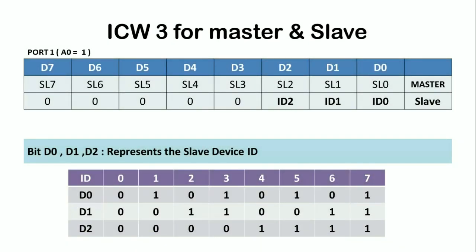The next control word is ICW3. This control word is necessary only when two or more 8259s are cascaded. A single 8259 can be connected to eight slave chips, giving the possibility of up to 64 hardware interrupts. That is, for a master PIC we can connect eight slave PICs, each slave PIC having eight interrupt input lines, so eight times eight equals 64 hardware interrupts total in cascaded mode.